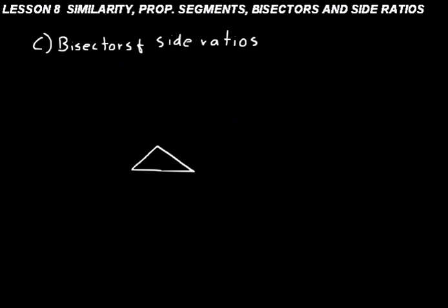Part C of this lesson is on bisectors and side ratios. Draw a triangle and then split the top angle with a bisector — split it into two equal halves, or congruent angles. Call one of them angle 1 and the other angle 2. We have sides A, B, C, and D. What we want to do is prove that those sides are proportional — that A over B is proportional to D over C.